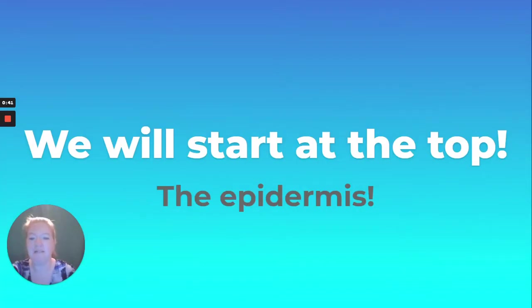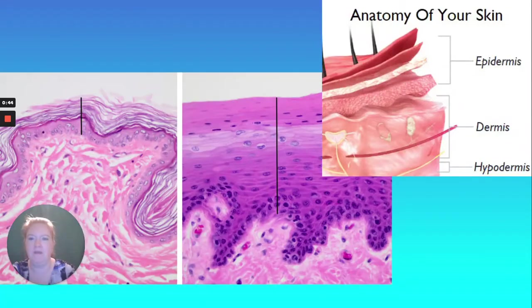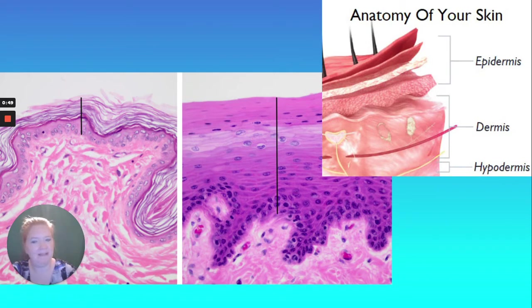We're going to start at the top, the epidermis. The epidermis, the outer layer of your skin. But it's not so simple — the epidermis is actually divided into five layers.